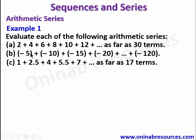For B, we have negative 5 plus negative 10 plus negative 15 plus negative 20 up to the last term, which is negative 120. For C, we have 1 plus 2.5 plus 4 plus 5.5 plus 7, as far as 17 terms.